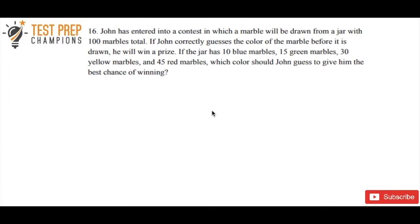So there are two ways to do this. The first is to use an intuitive or common sense approach, and just reason your way through it. Imagine that you're John, going into a contest where you've got to guess which color marble will be drawn. You could say, well, there's 45 red marbles and there's only 10 blue, 15 green, and 30 yellow. So since the most red marbles are in the jar, I'll guess red. If you used that logical common sense approach, that's perfectly valid. If you got red, that is the answer.